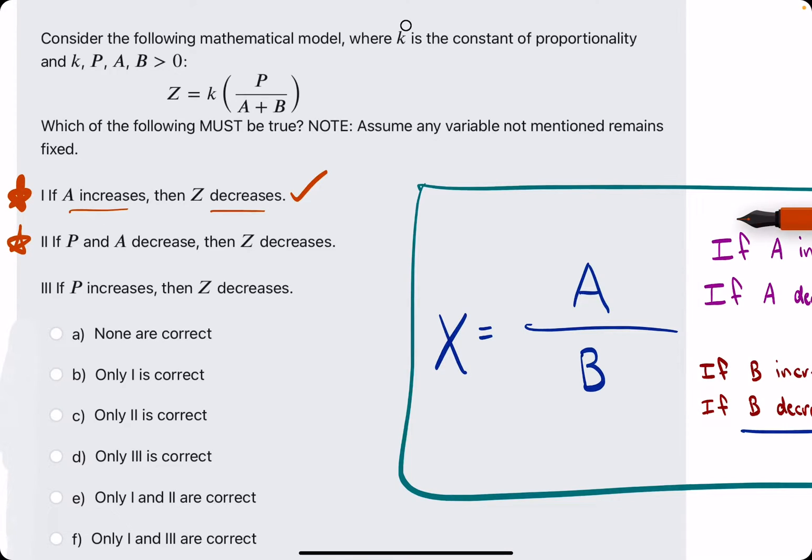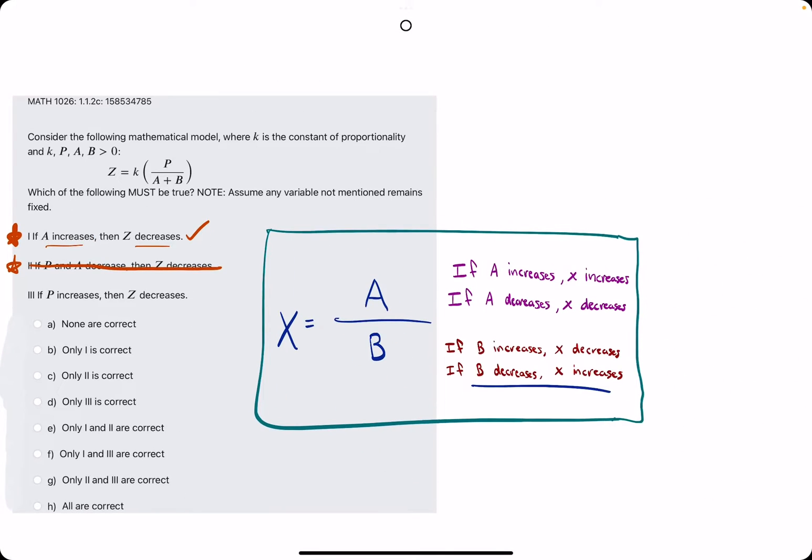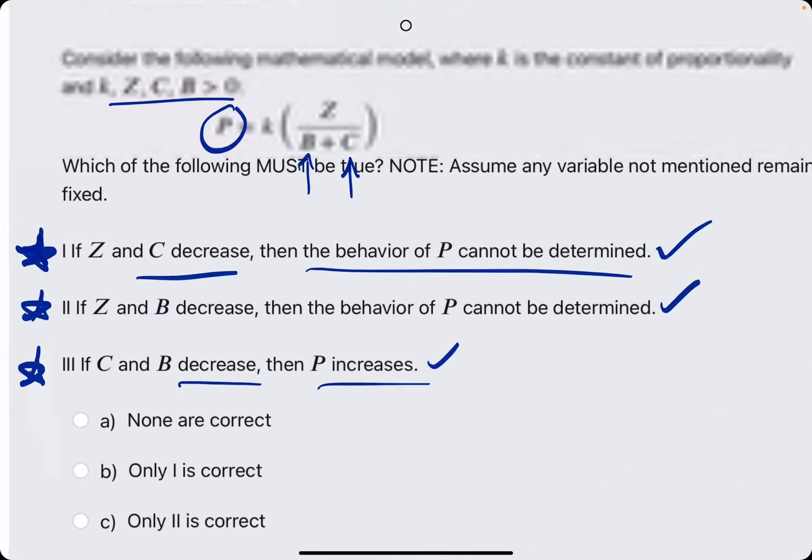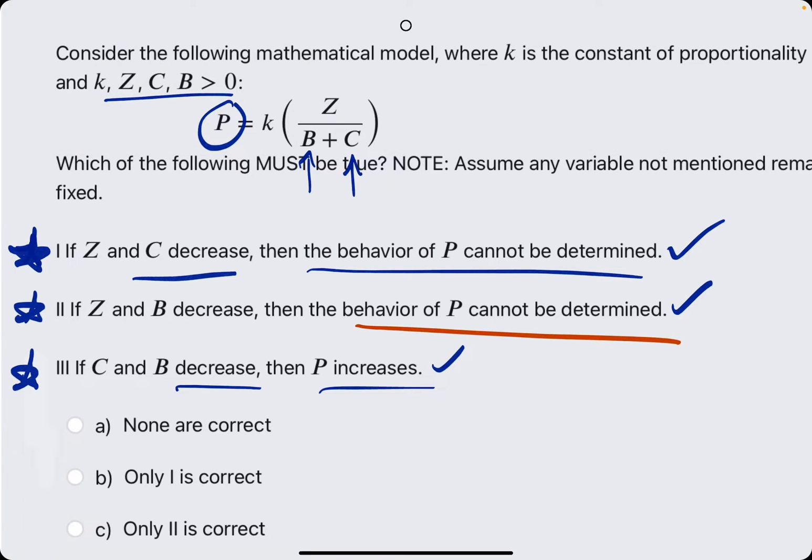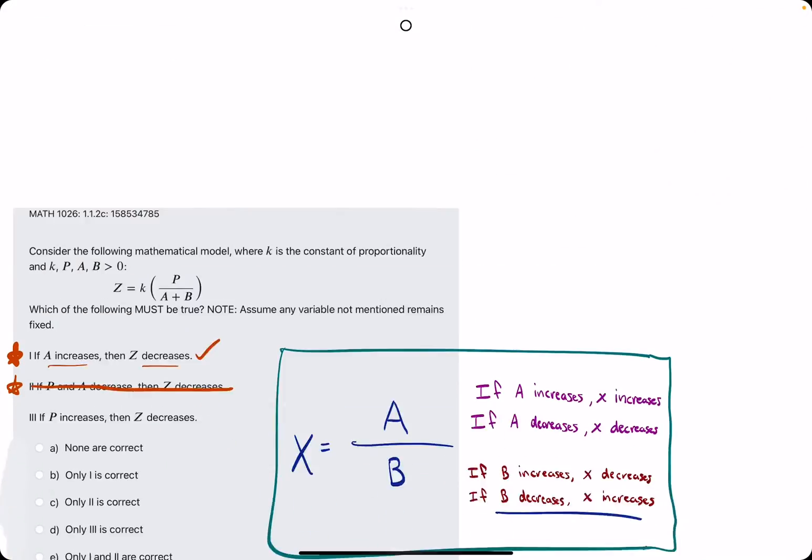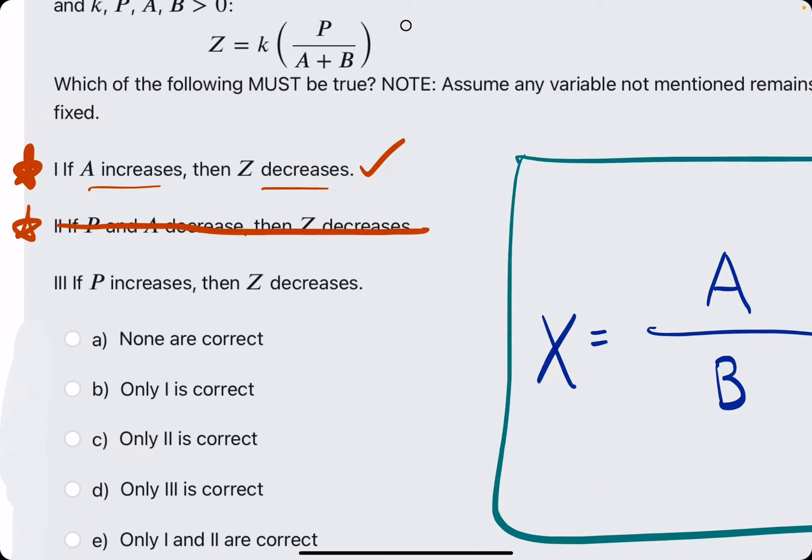Unless we know exactly by how much P and A are decreasing, there's no telling what Z will do. So this is a false statement. Oftentimes you may see statements like this where it says the behavior of P cannot be determined—something like that is what we would have been looking for to be true, because we just can't tell what Z is going to do.